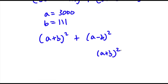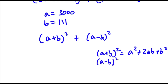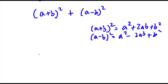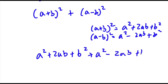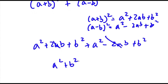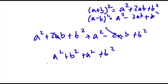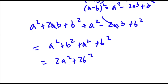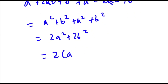Now, (a plus b) squared is equal to a squared plus 2ab plus b squared, and (a minus b) squared is equal to a squared minus 2ab plus b squared. So if I add these two together, I get a squared plus 2ab plus b squared plus a squared minus 2ab plus b squared. The 2ab terms cancel out, and I'm left with 2a squared plus 2b squared, which factors to 2 times (a squared plus b squared).